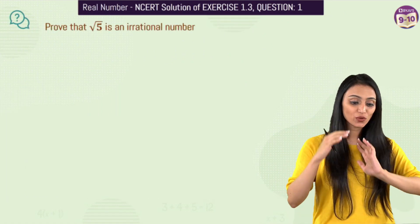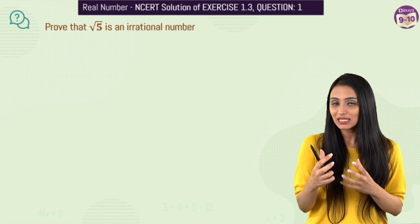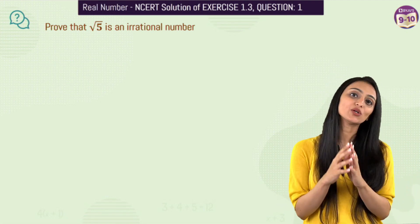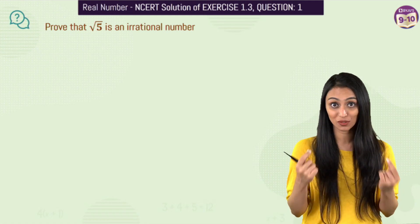Well the question is, prove that root 5 is an irrational number. So this is an important type. So basically when we come across such questions, we know that root 5 is irrational but we need to prove it and we prove it using the contradiction method.